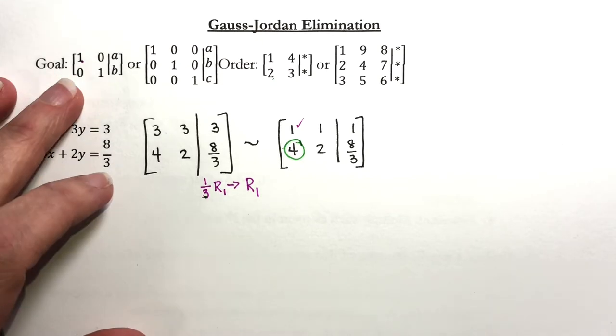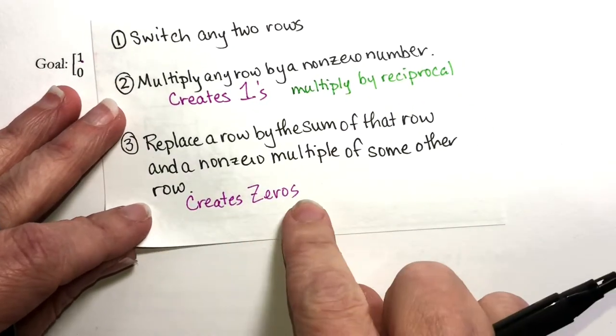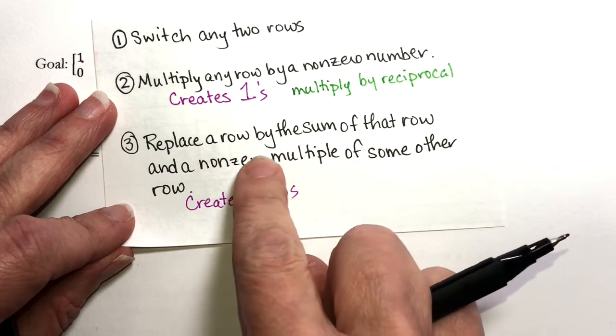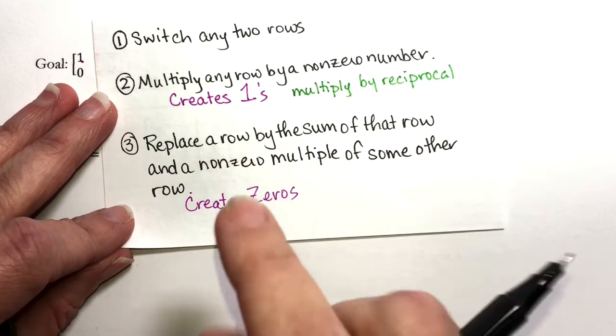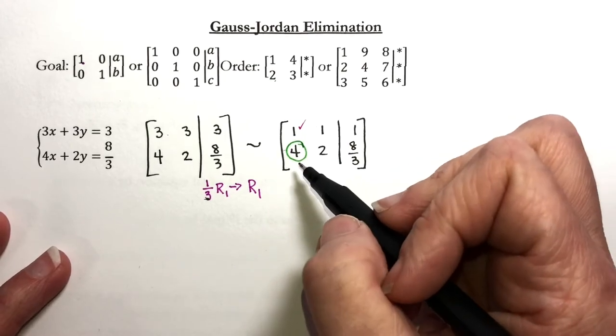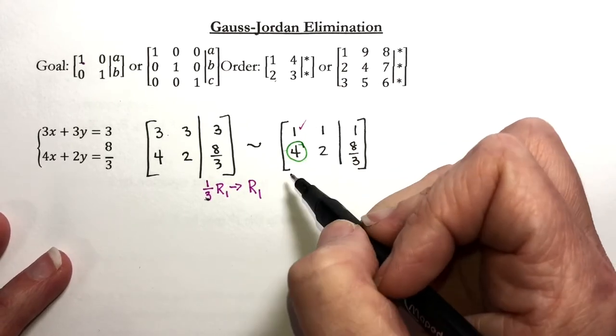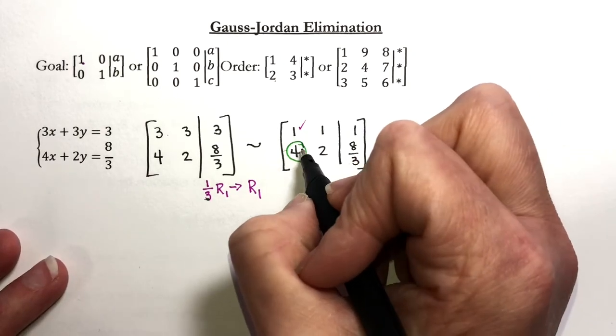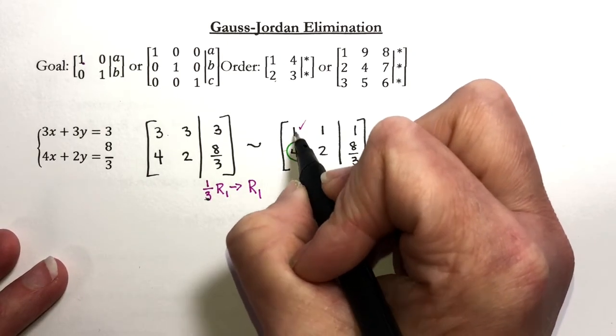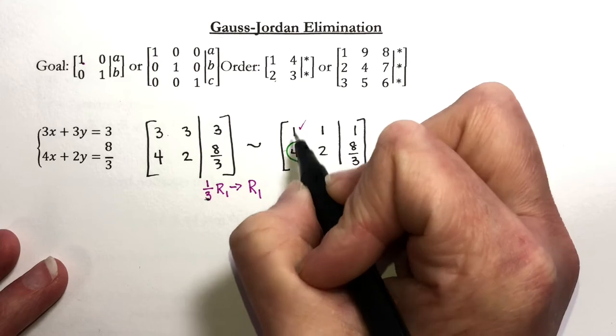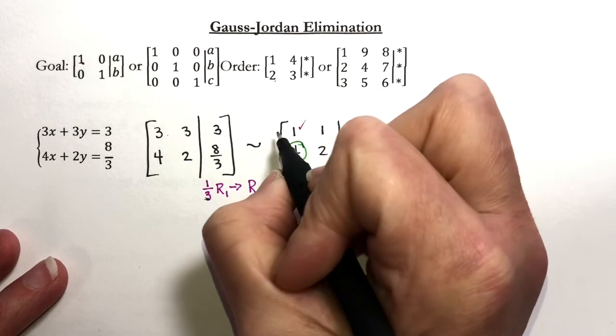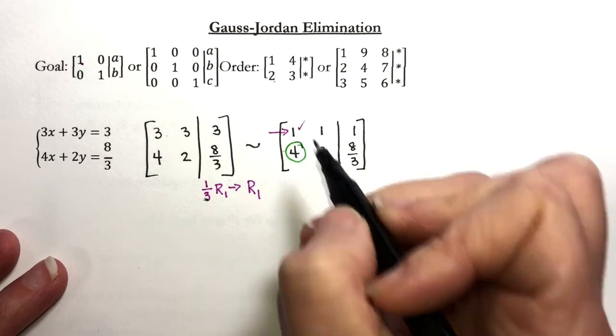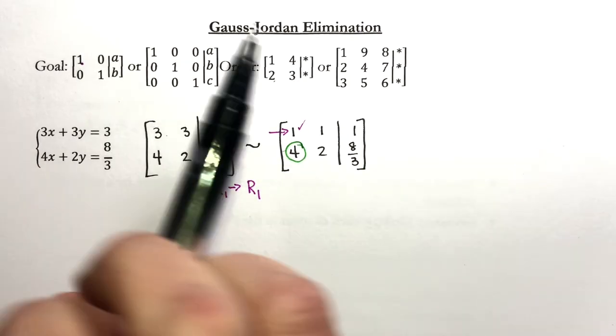Remember that when we want a zero, we're using property three. We're going to find a tool row and use it. Now it's easy when you have a two by two because your tool row is always the other one, whatever it is. But in general, if I'm trying to create a zero here, I have created a one somewhere in this column. And where have I done that? I just created or made sure that I had a one right there. So that is my tool row.